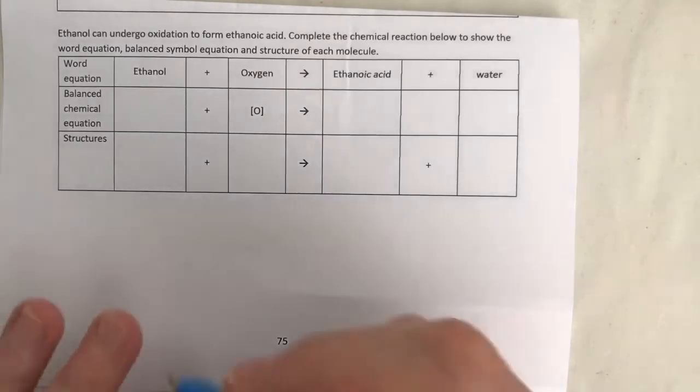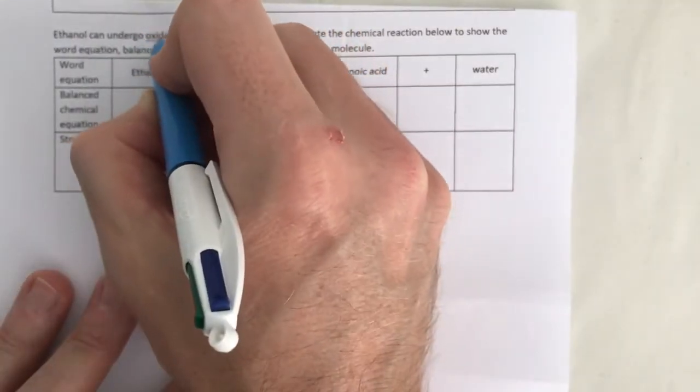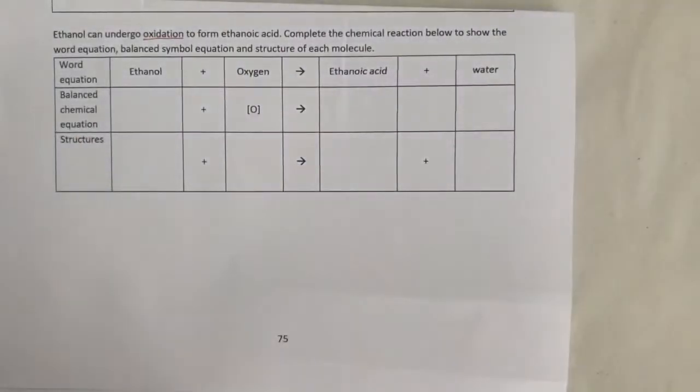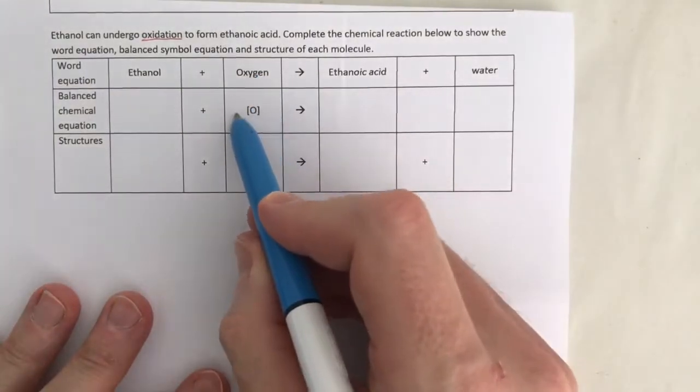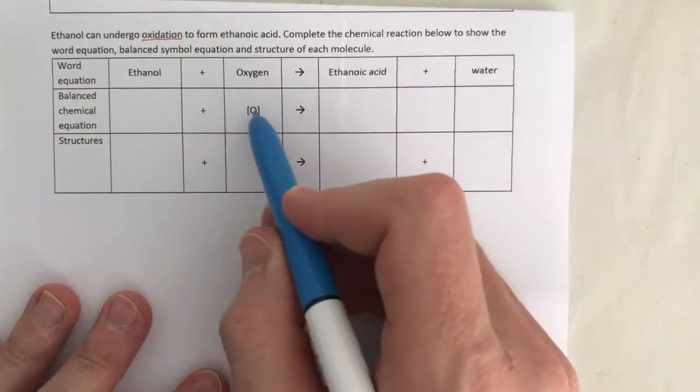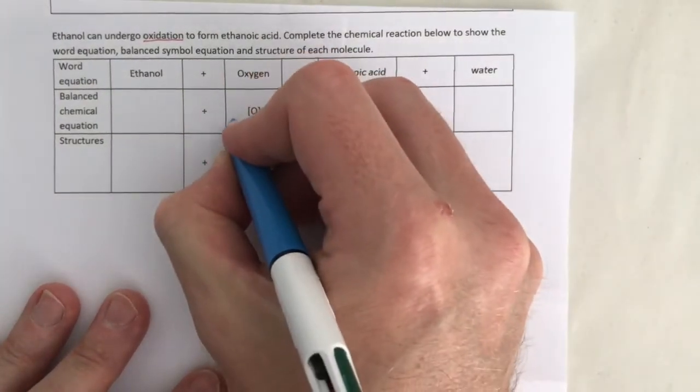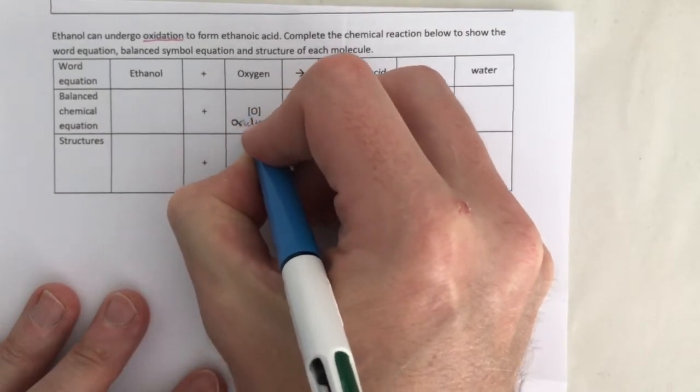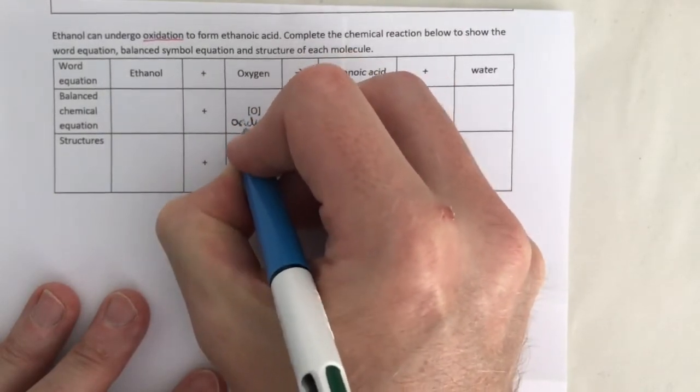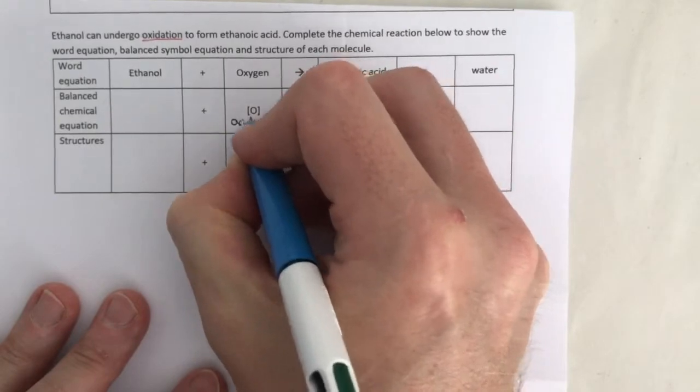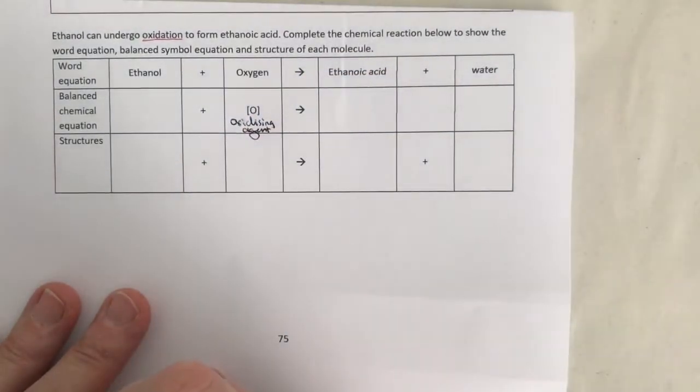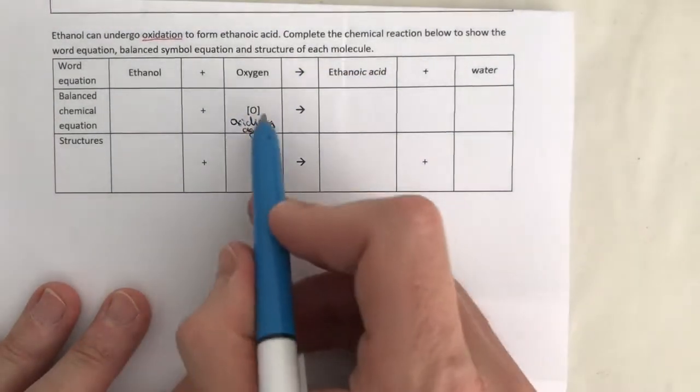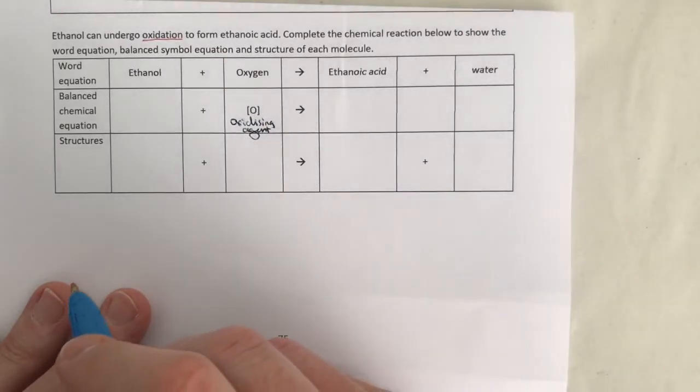We need to remember that when we talk about oxidation, what this means is that we are adding oxygen. Now for our equations, we're just going to represent the oxygen as this. This is representing what we call an oxidizing agent. But for GCSE, we don't need to go into detail beyond just saying it's an oxidizing agent and we just represent it as an O in a square bracket.